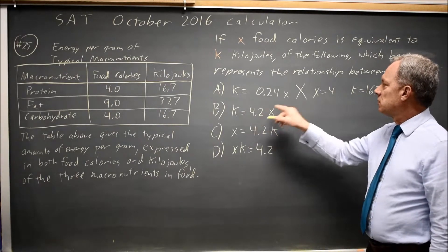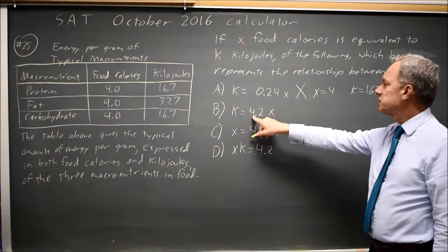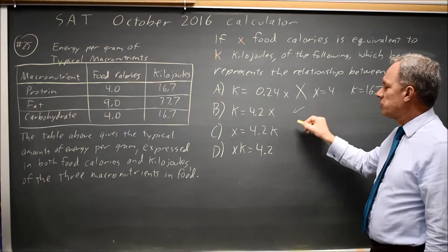Is 16.7 equal to 4 times 4.2? Well 4 times 4.2 is 16.8, so that's pretty close.